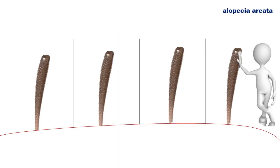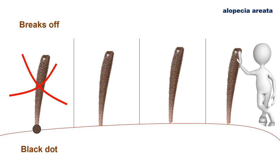What can happen to an exclamation mark hair in real life? Well, the most probable thing is it becomes thinner and thinner until it breaks off. What will be happening is that the dark hair residue will stay in the hair follicle. It will be visible in the hair follicle opening from the perspective of a dermoscope, and it will look like a black dot — and these are the black dots.